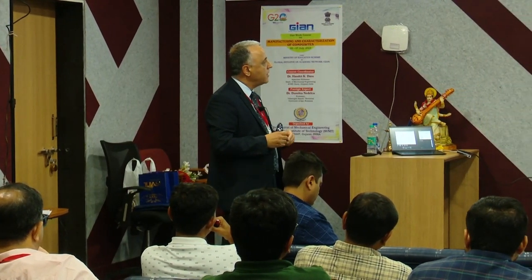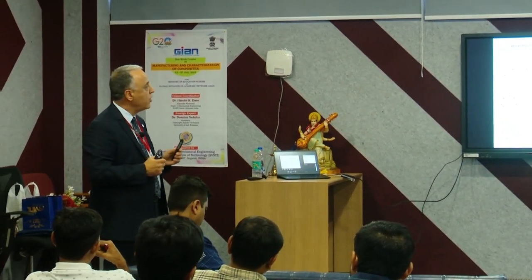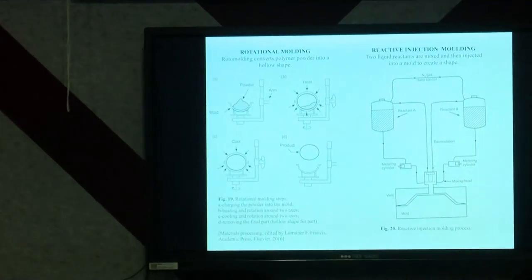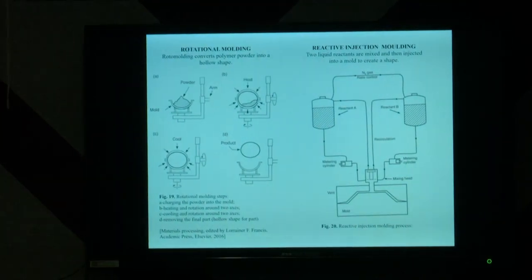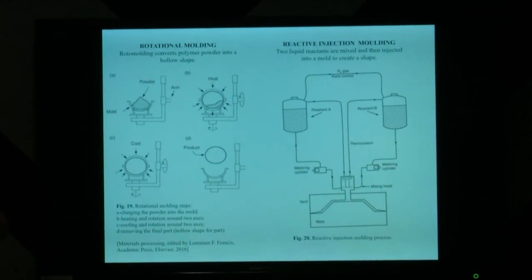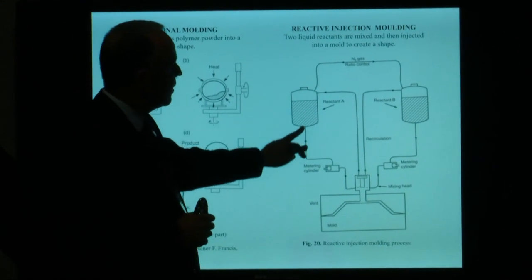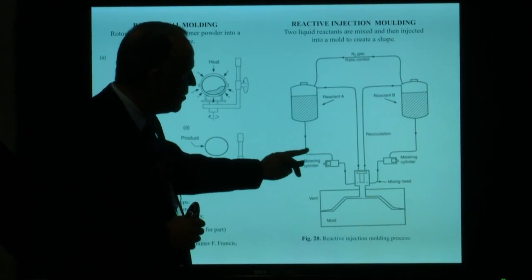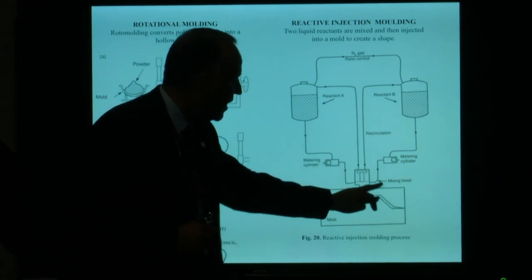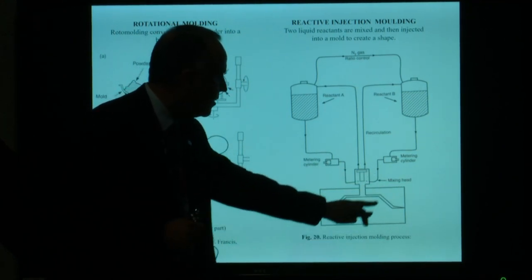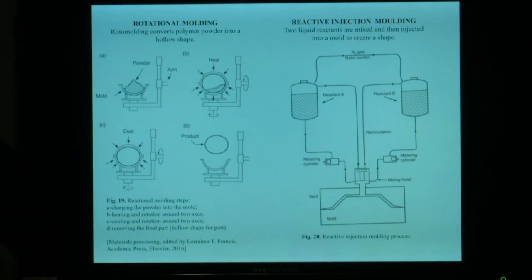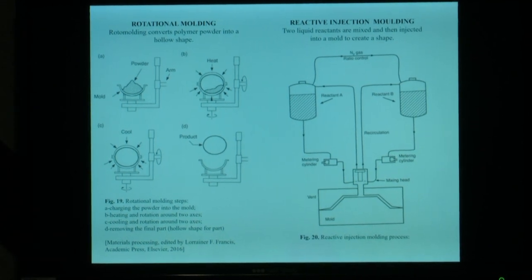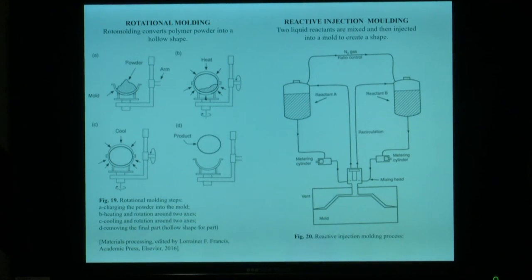Reactive injection molding requires two liquids. The reactants are mixed together and then injected into the mold. You can see the first reactant, the second one, recirculation, metering cylinder for both, and then mixing, heating, and inside the mold we obtain the final product. This is the general sketch of reactive injection molding.